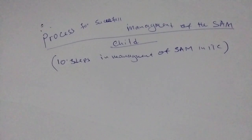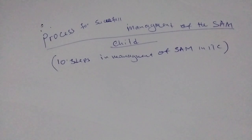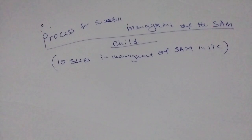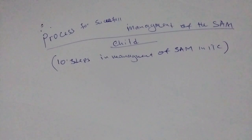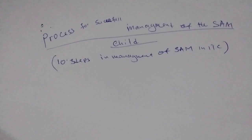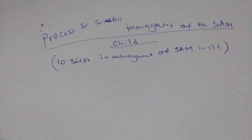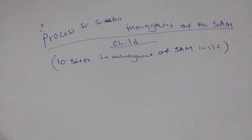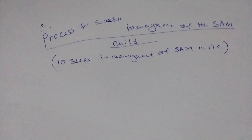Welcome back guys, today we are going to see the successful management of a child with severe acute malnutrition — that is SAM — and the 10 steps in management of SAM in ITC. Successful management of a severely malnourished child requires both medical and social problems to be recognized and corrected. What are those 10 steps?